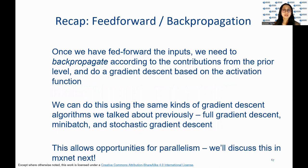Now let's recap feedforward and backpropagation used to train multilayer networks. After feeding forward the inputs, the network backpropagates according to the contributions from the prior level and performs a gradient descent based on the activation function. We can use the same gradient descent algorithms as previously discussed, such as full gradient descent, mini-batch, and stochastic gradient descent. This allows opportunities for parallelism, which we will discuss in MXNet.